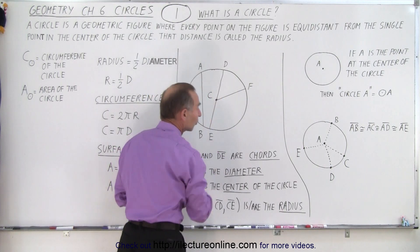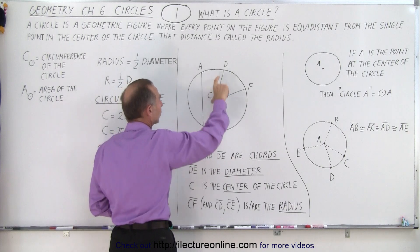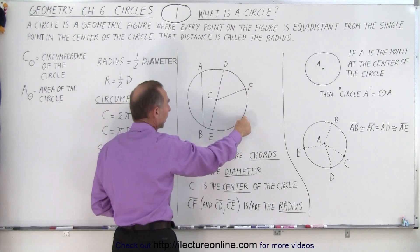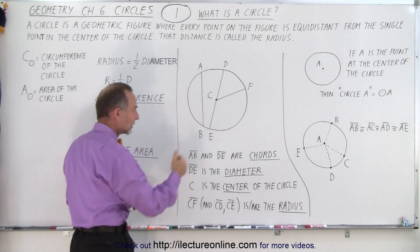That line connecting those two points is the diameter of the circle. Any line from a point on the circle to the center of the circle is called the radius. So here we have a few definitions.